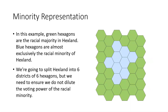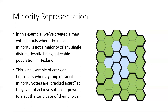Let's start with a pretty simple example. In this example of Hexland, we have some green hexagons and some blue hexagons. The green hexagons are the racial majority in Hexland, and the blue hexagons are almost exclusively the racial minority of Hexland. We're going to take this map and split it into six districts, with each district being six hexagons. But we need to ensure that we're not diluting the voting power of the racial minority. Let me show you what that would look like if we draw a map that would actually dilute the power.